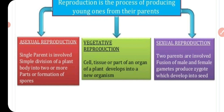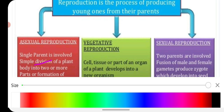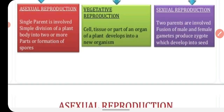We will study three types of reproduction: asexual reproduction, vegetative reproduction, and sexual reproduction. Asexual reproduction involves a single parent, with simple division of a plant body or formation of spores. Vegetative reproduction involves vegetative parts like roots, stems, and leaves. In sexual reproduction, two parents are involved, male and female gametes fuse to form a zygote, which develops into an embryo inside a seed.